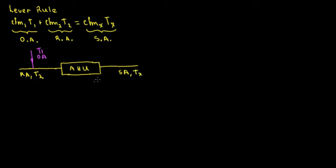The lever rule is pretty much this formula, and why is this the formula? Because in the psychrometric chart what we have is linear behavior. In order to make this simple, let's make an example.